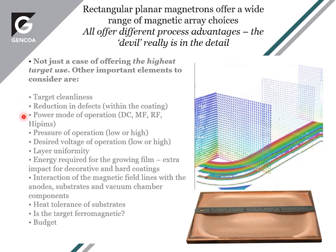Mode of operation — DC, medium frequency, RF, HiPIMS — all have different requirements magnetically. Pressure of operation also matters: for low pressure processes you need very strong fields, and at high pressures you need weaker fields. Voltage of operation is similar: for low voltage operations such as sputtering TCO materials like ITO, we tend to go towards a high strength field.